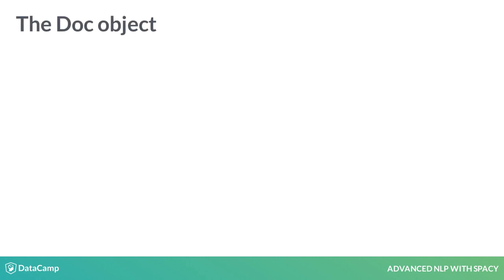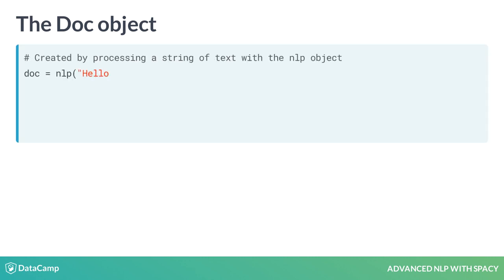When you process a text with the NLP object, spaCy creates a doc object, short for document. The doc lets you access information about the text in a structured way, and no information is lost.